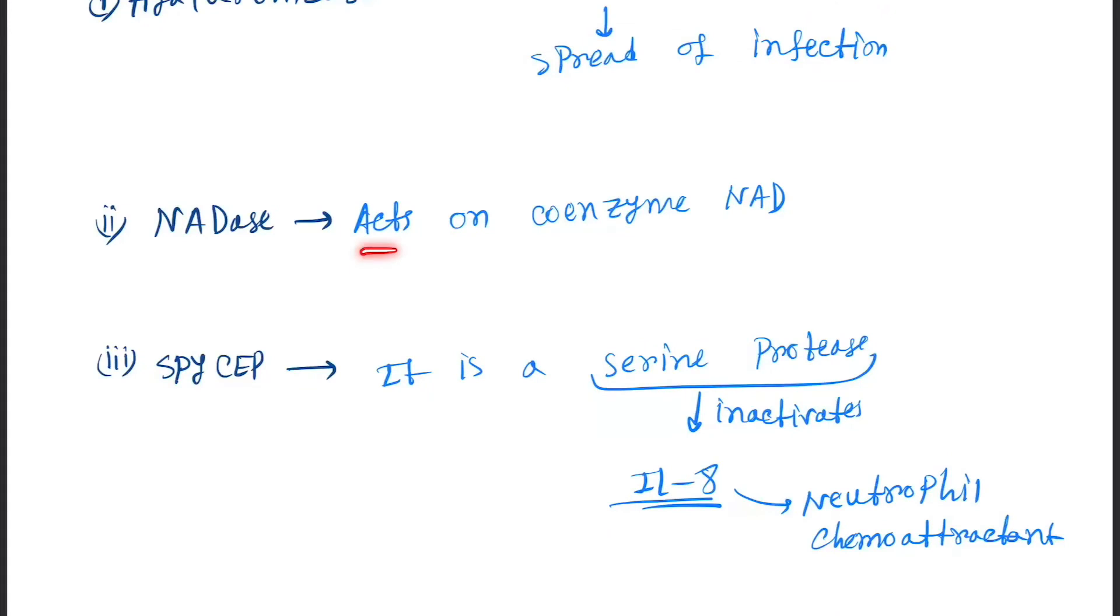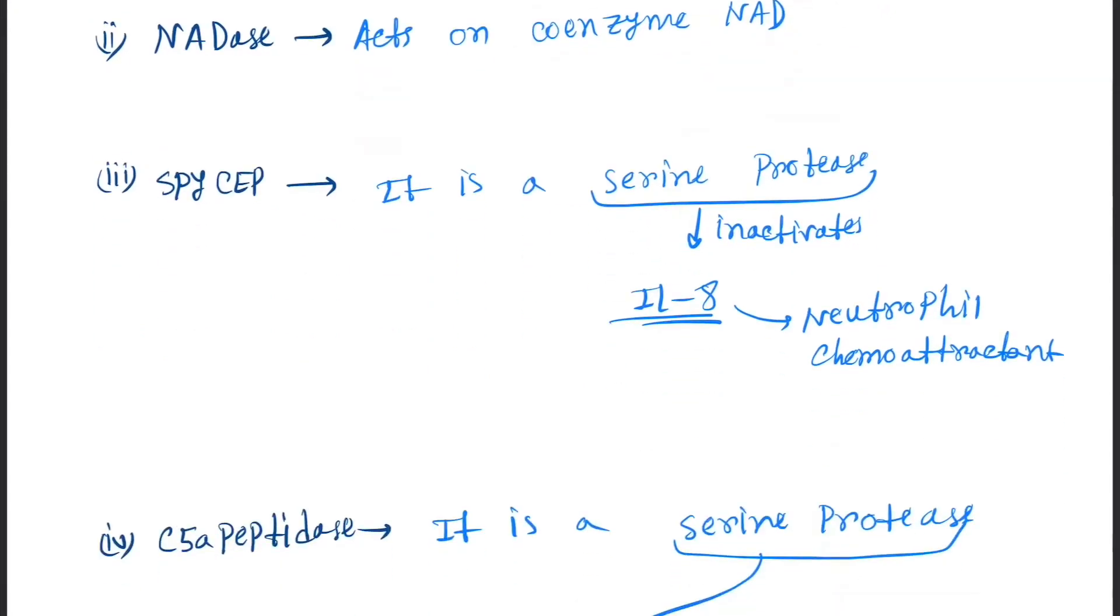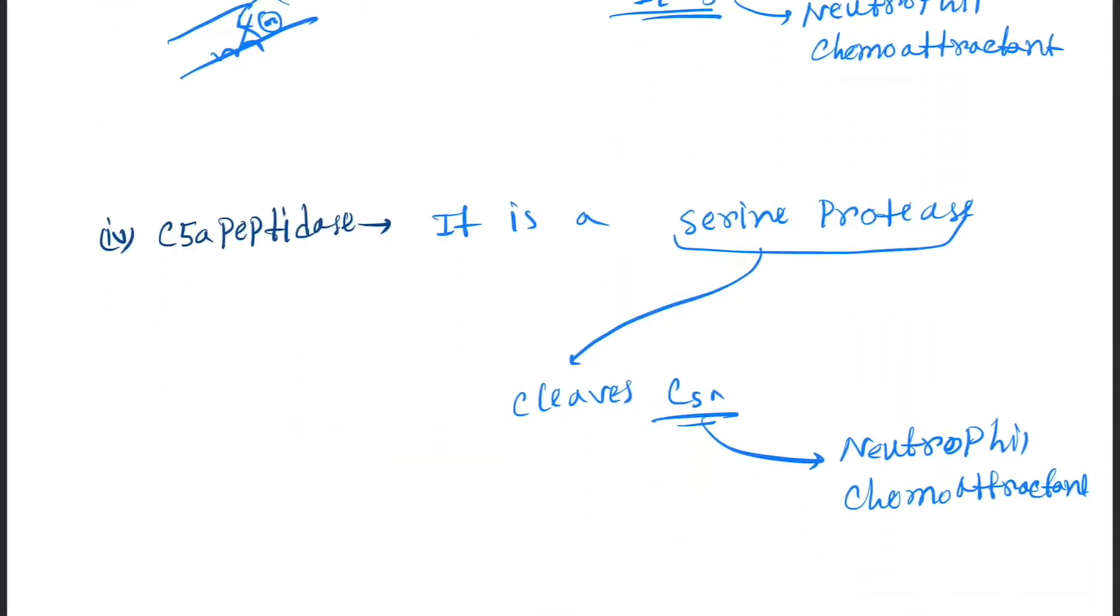Next, SCP (SCPEP), it is a serine protease which inactivates the interleukin-8. Remember, interleukin-8 is a neutrophil chemoattractant. So what will happen in the infected site? Neutrophils come as soon as possible, so they will not be able to come there.